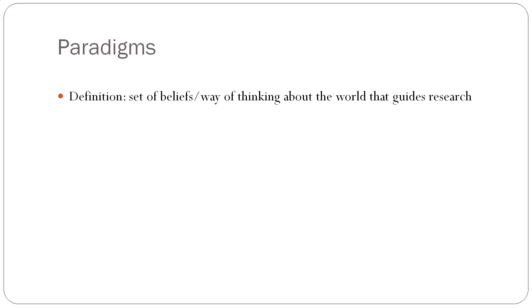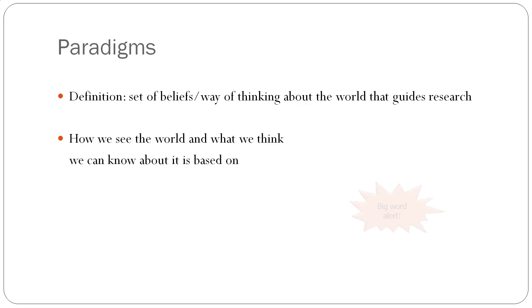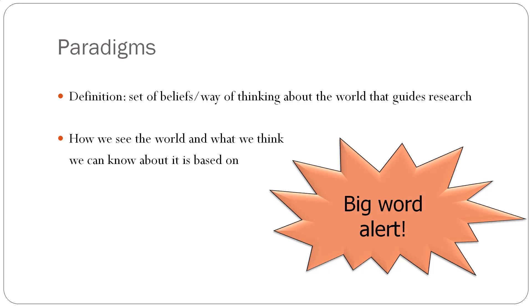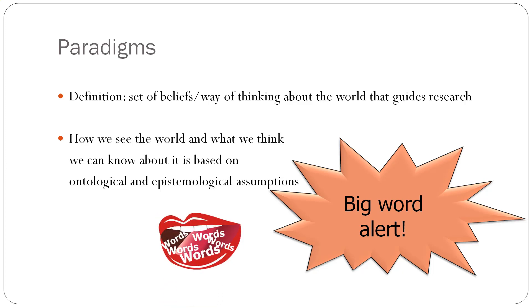A paradigm is a set of beliefs, or a way of thinking about the world, that guides research. So essentially, how we see the world and what we think we can know about it is based on — and this is a big word alert, I have two big words coming up — based on ontological and epistemological assumptions. I wasn't kidding with the big words, but breaking it down, they're not just words. The key here is this definition: a set of beliefs and a way of thinking about the world that guides research.